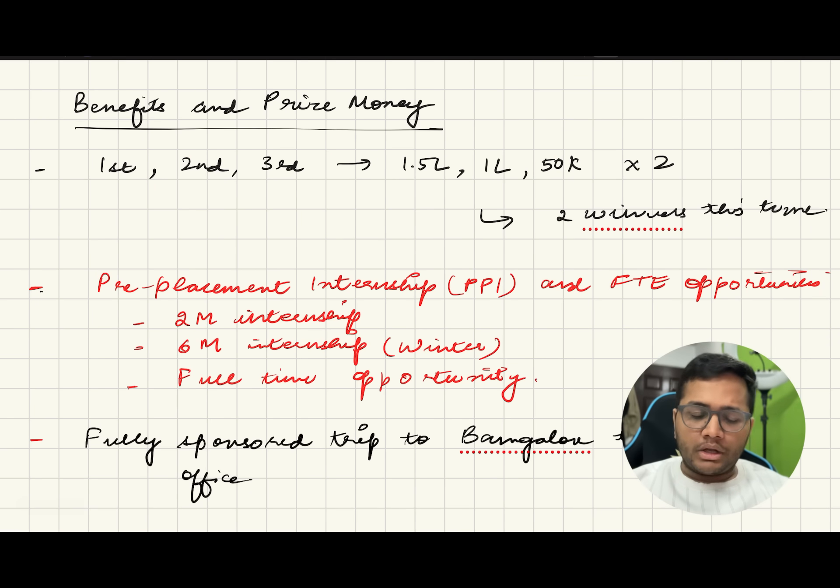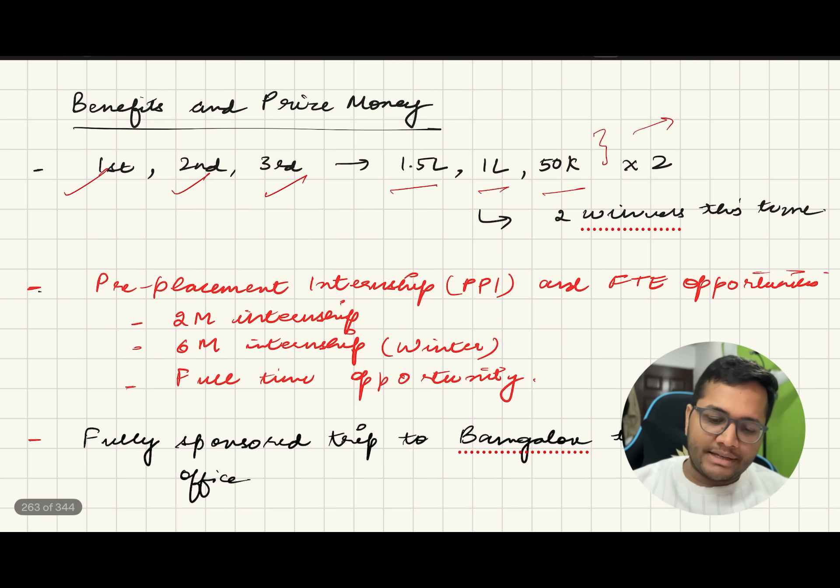Benefits. What are the benefits that you'll be getting? First, second, third prize would be 1.5 lakhs, 1 lakh, 50,000. So this is the prize money and they have two winners each, like there'll be two first prizes, two second prizes, two third prizes, total of six lakh rupees at stake.